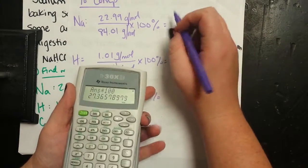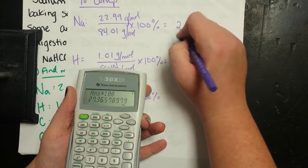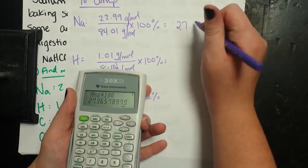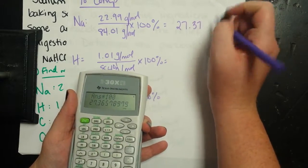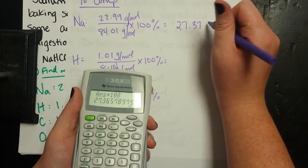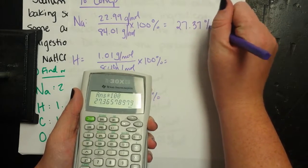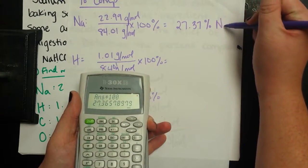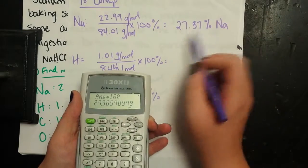So sodium contributes 27.37. Go ahead and just keep it to two decimal places. So 27.37% of sodium bicarbonate is from sodium.